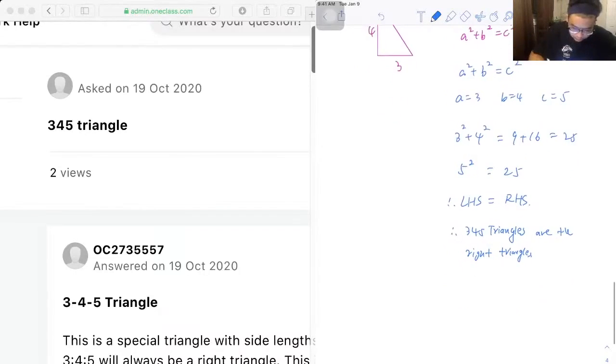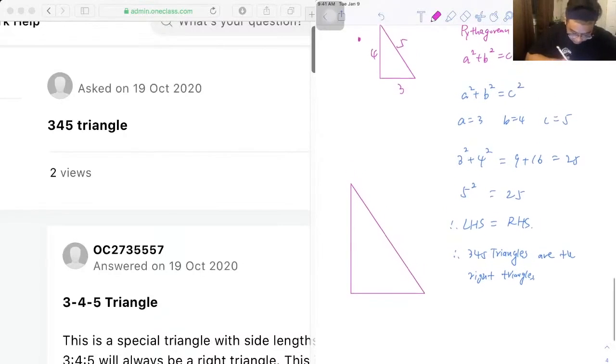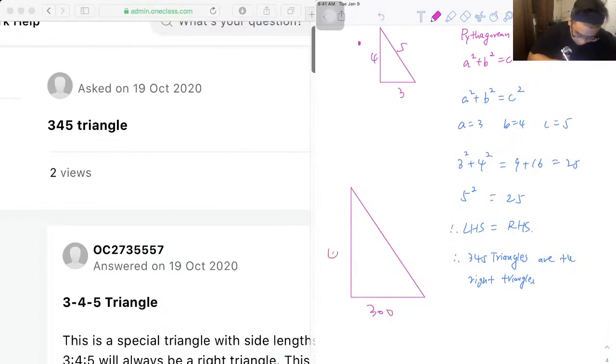And so, let's say we have another example. This is a 300, 400, and 500 triangle, and this is still going to be a right triangle following Pythagorean theorem as we just increased each side by multiplying by 100. Because 5 times 100 is 500, 3 times 100 is 300, and 4 times 100 is 400.